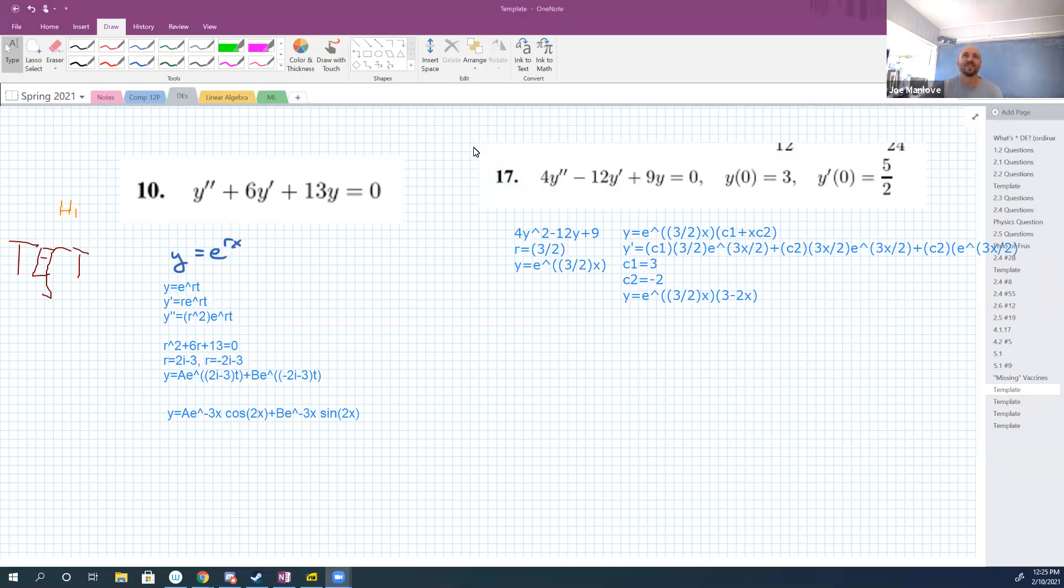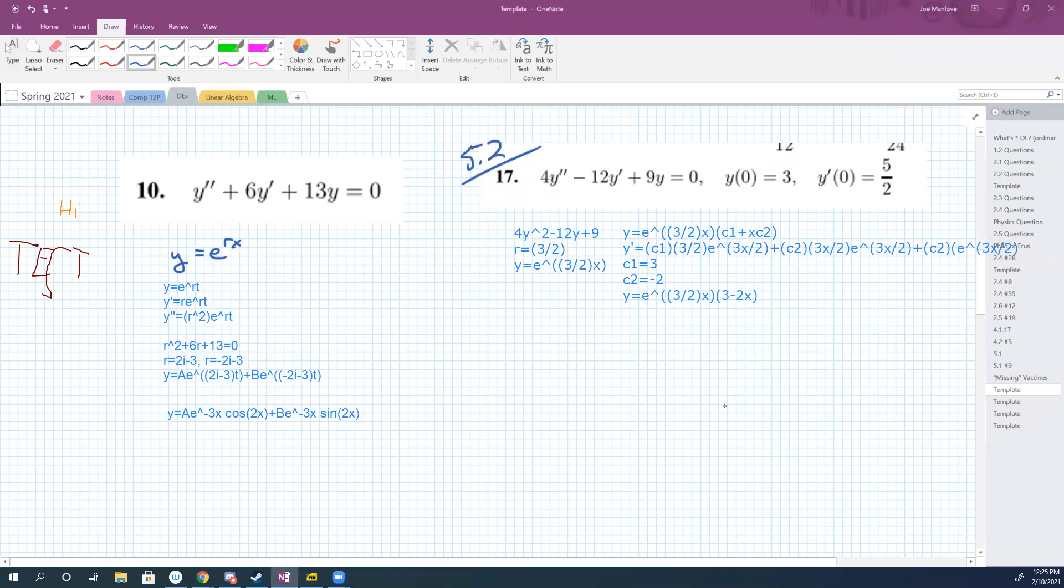Let's talk through 5.2 number 17. First, solved it the same way you did for 10. Set it to four y's, or I guess I should have done r. I accidentally put y, it should have been r. We made our substitution and got our auxiliary equation.